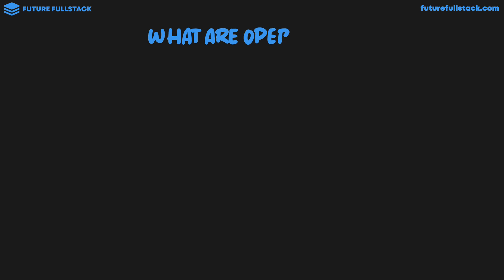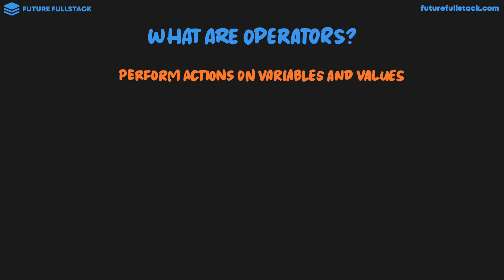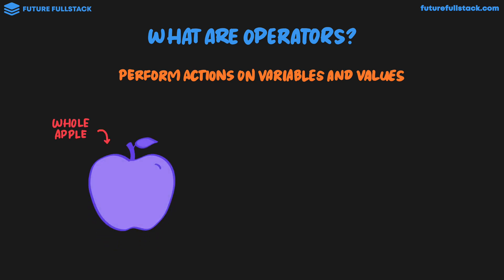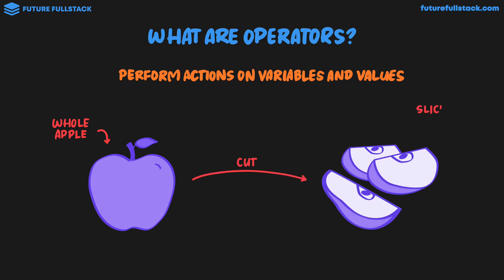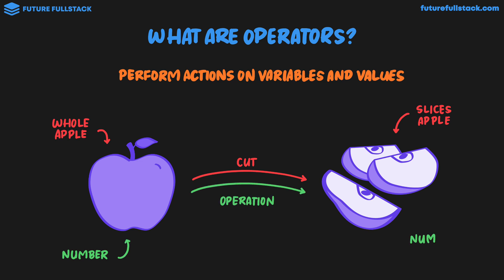Let's start off nice and slow and discuss what operators are. Operators perform actions on variables and values. In our juice bar analogy, we can think of it like this: we have an ingredient like a whole apple. In the kitchen, we can use a knife to cut the apple, and we end up with slices of apple, which we can then put in the blender. The exact same thing is happening in JavaScript, where instead of an ingredient, we have a primitive value like a number. We then perform an operation, and the number is transformed.